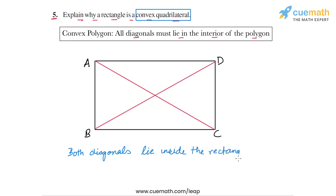This is the reason why any rectangle will always be a convex quadrilateral, because both of its diagonals lie inside the rectangle. So that completes question number five.